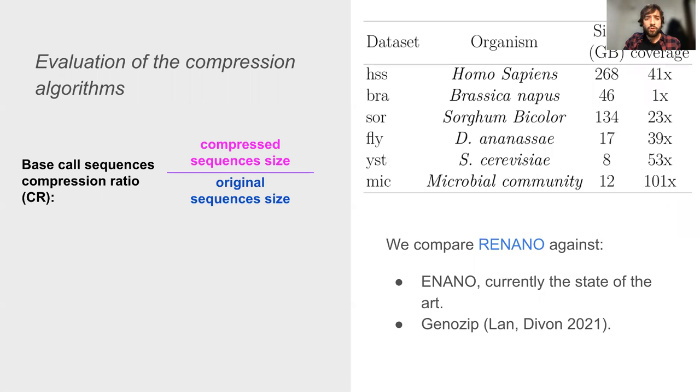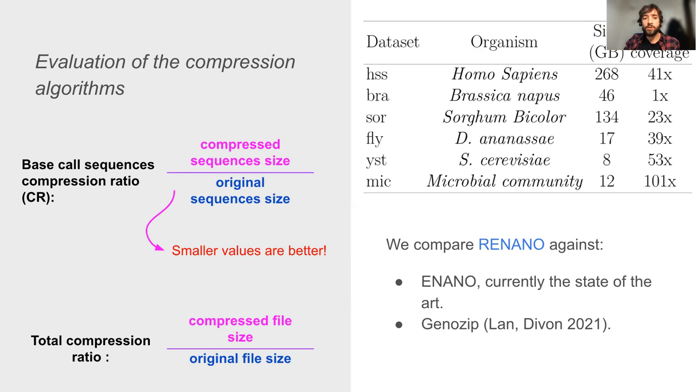We compare them against the current state of the art compressor eNano and to the general purpose genomic compressor GenoSeq. Also, to measure the performance of a compressor on the base call sequences of a dataset, we define the compression ratio as the quotient between the compressed size of the sequences and their original size. This definition makes smaller compression ratios better.